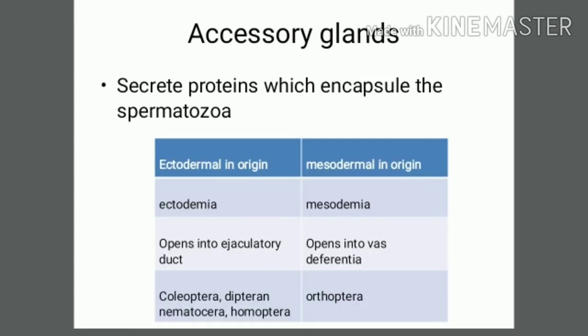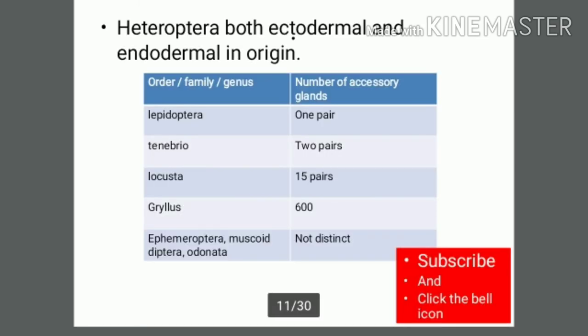Accessory glands secrete proteins that encapsulate the spermatozoa. They can be ectodermal or mesodermal in origin, and in Heteroptera they are both ectodermal and endodermal in origin. The number of accessory glands varies by insect order: Lepidoptera have one pair, Tenebrio has two pairs, Locust has 15 pairs, and Drilus has 600 accessory glands. In Ephemeroptera, Diptera, and Odonata, accessory glands are non-distinct.